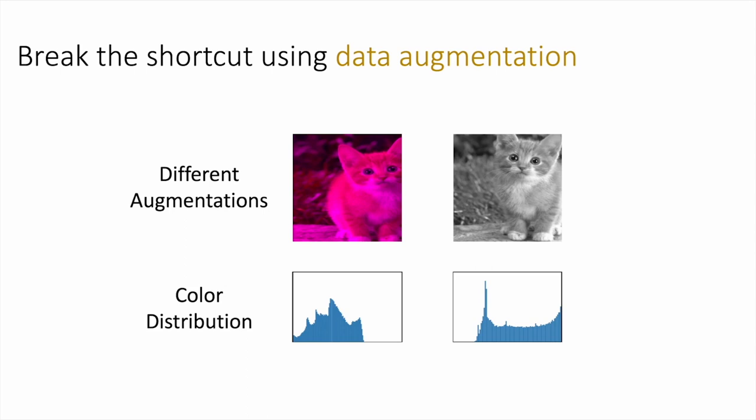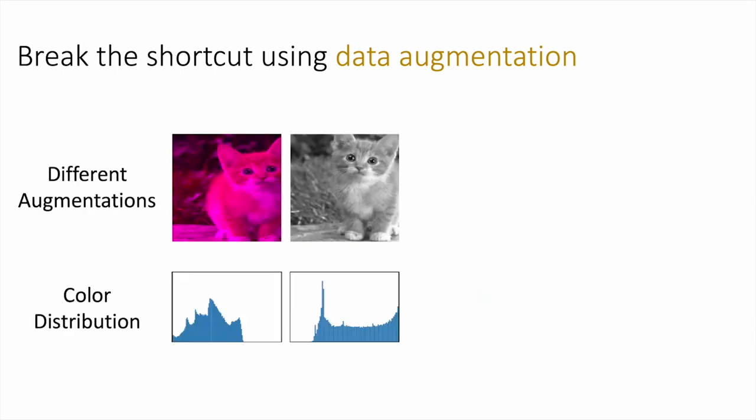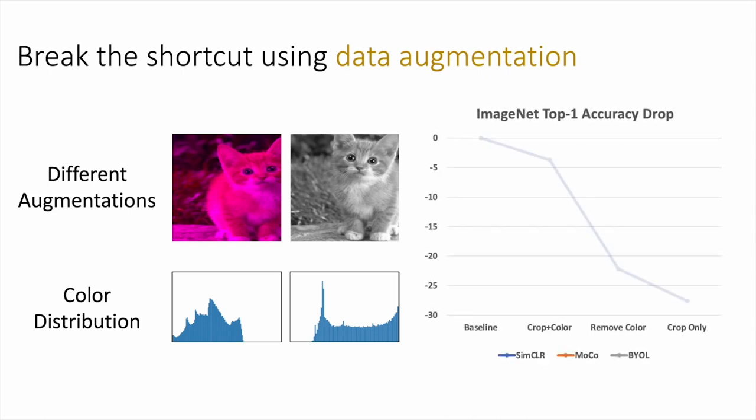People traditionally address this problem using data augmentation. For example, you can use color jittering to break the color distribution. In particular, we can look at the performance of contrastive learning as we remove these augmentations. The performance degrades by about 30% for SimCLR. MoCo and BYOL are slightly better, but their performance degrades by 15% in comparison to having these data augmentations.